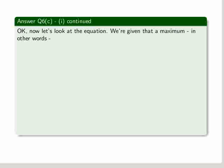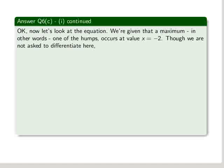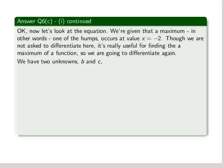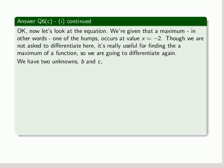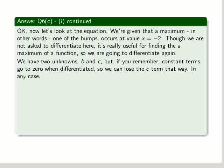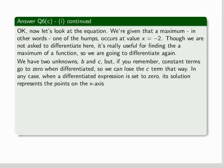Now let's look at the equation. We're given that a maximum, in other words, one of the humps occurs at value x equals minus 2. Though we are not asked to differentiate here, it's really useful for finding the maximum of a function. So we are going to differentiate again. We have two unknowns, b and c. But if you remember, constant terms go to zero when differentiated. So we can lose the c term that way. In any case, when a differentiated expression is set to zero, its solution represents the points on the x-axis where a maximum or minimum occurs.